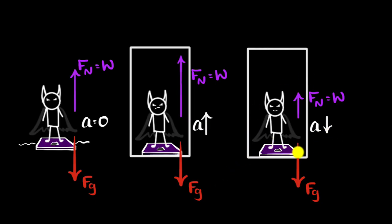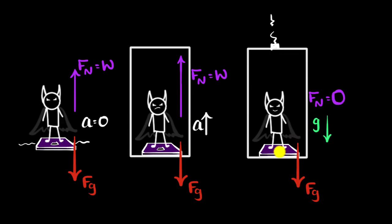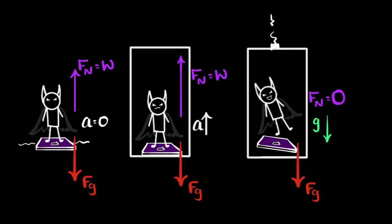What happens in the extreme case where your elevator is in free fall? The normal force will be zero, because when you're in free fall, gravity is the only force acting on everything — the elevator, the weighing scale, and even you. So the normal force is zero, you will feel weightless, and everything inside will feel weightless. There's hardly any contact force between the two. Since you don't feel your weight at all, it'll feel like you're just floating. Even though you have the same gravitational force, because you're in free fall and the floor is going away from you at the same rate you are falling down, you don't experience any weight — you get weightlessness.